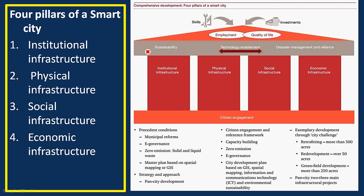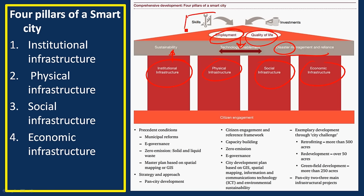Now let's look at the four pillars of smart cities. The pillars include institutional infrastructure, physical infrastructure, social infrastructure, and economic infrastructure. These are maintained sustainably with technology used as an enabling tool. This infrastructure is used to meet disasters in disaster management, provides employment to citizens, and improves quality of life. To create employment, citizens need to be skilled, and investments are required.